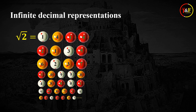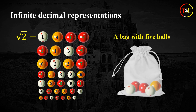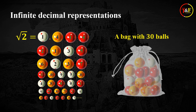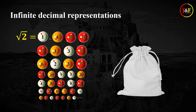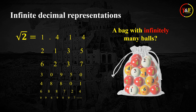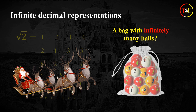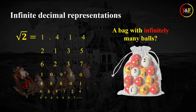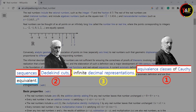For example, in reality, there can be a bag with 5 balls in it, and there can be a bag with 30 balls in it. But can there be a bag that contains infinitely many balls in it? Definitely no. Actually, a bag with infinitely many balls would only appear in a fantasy — like Santa and his reindeer. In this regard, the concept of infinite decimal representations is also a complete fantasy. You might wonder if the other two definitions of the real numbers presented by Cantor and Dedekind also involve infinity. Considering all the definitions of real numbers are equivalent, the answer is definitely yes.